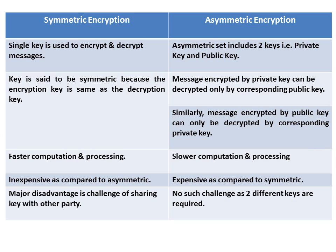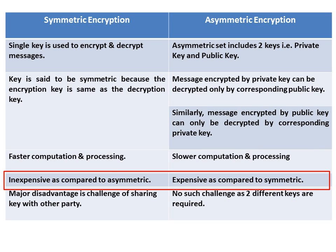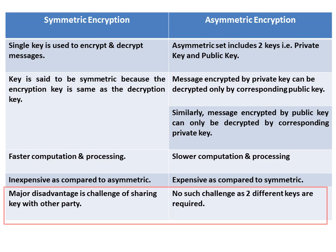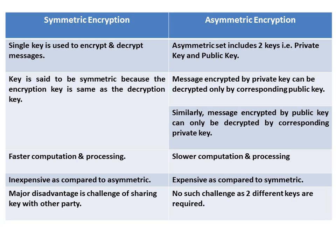Symmetric encryption offers faster computation and processing, whereas asymmetric encryption involves slower computation and processing. Symmetric encryption is inexpensive as compared to asymmetric, whereas asymmetric is expensive as compared to symmetric. A major disadvantage of symmetric encryption is the challenge of sharing the key with the other party. Asymmetric encryption resolves this challenge as two different keys are required.